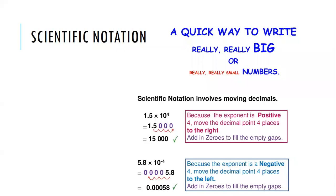We talked about that scientific notation is a quick way to write really, really big or really, really small numbers. If your power is positive, that means you had a really big number because the decimal place would be moved to the right. If your power is negative, that means you had a really, really small number and your decimal will be moved to the left.